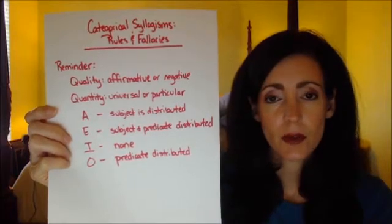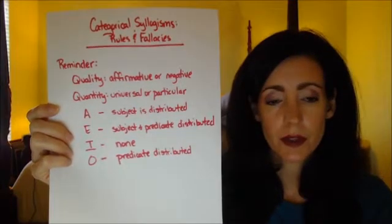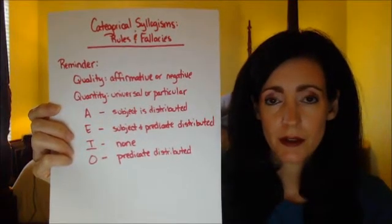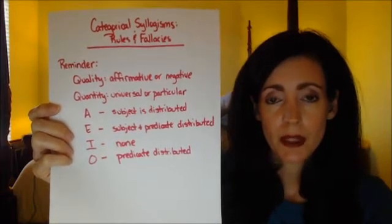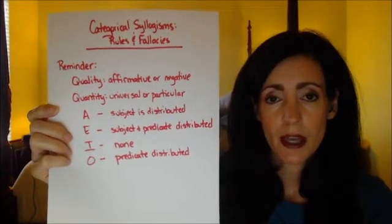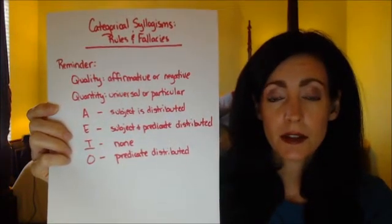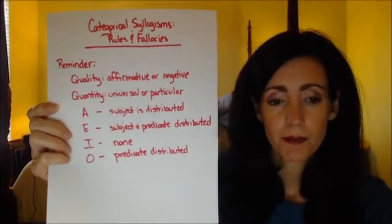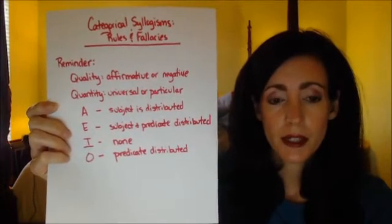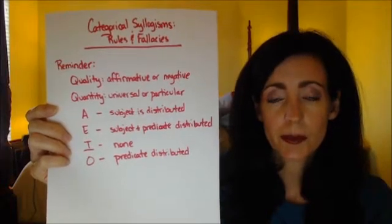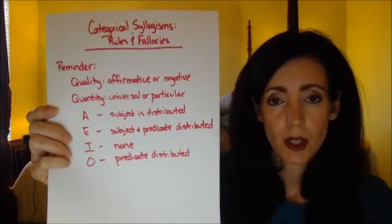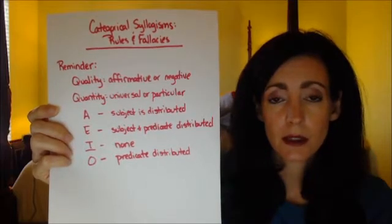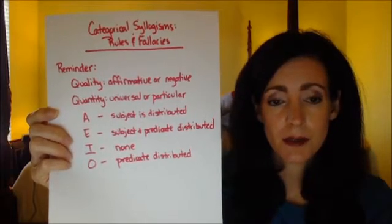Just in case you don't remember, here's a little refresher. Quality can either be affirmative or negative. Affirmative statements would be the 'all are' or the 'some are.' The negative statements would be the 'no' or the 'are not' statements. With quantity, it's either universal or particular. Universal would be the 'all' and 'no' statements, and particular would be the 'some' statements.